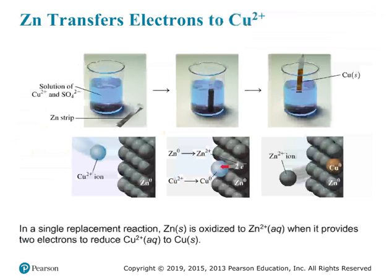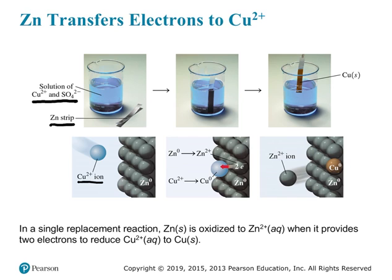Another example of an oxidation-reduction reaction: if you place a strip of zinc into a beaker filled with copper ions and sulfate ions, the copper ions in solution are going to gain two electrons from the zinc. Zinc gives up two electrons to the copper ion, so the copper ion becomes neutral copper and deposits itself on the surface of the zinc strip.